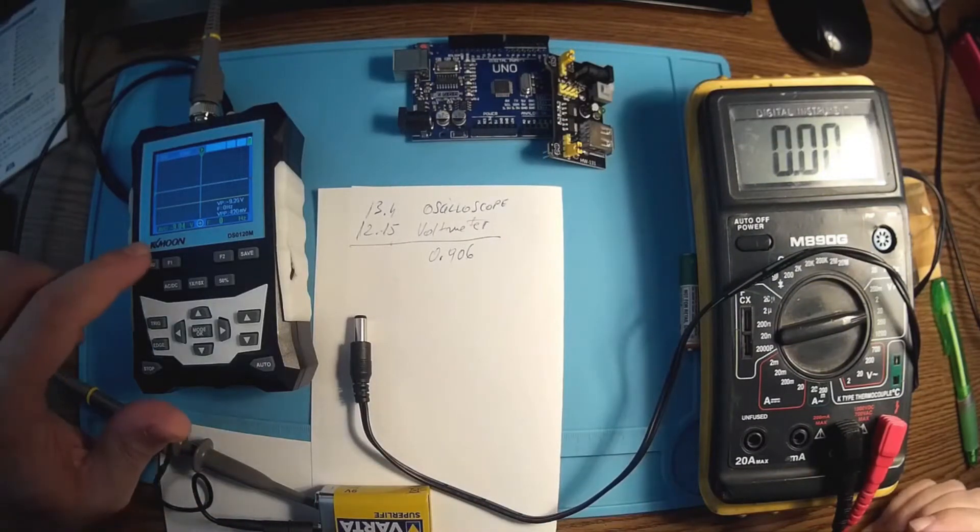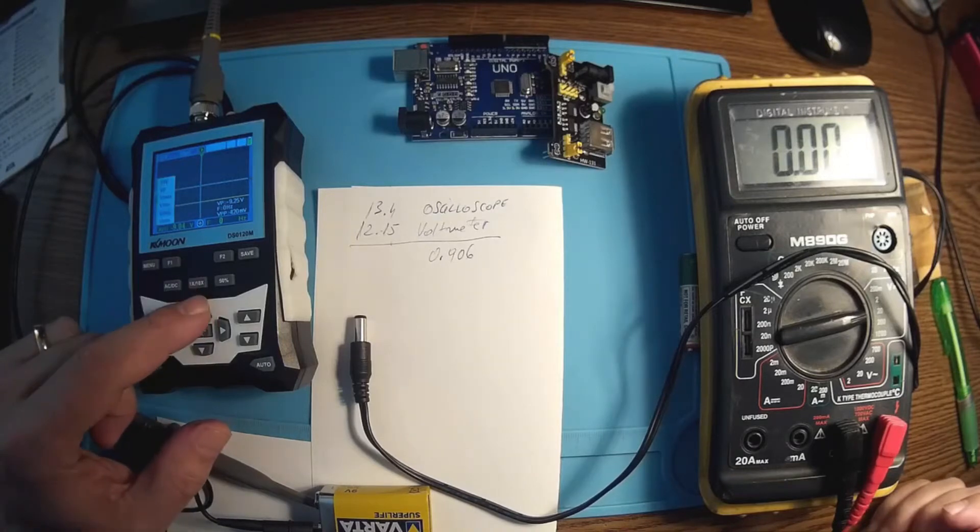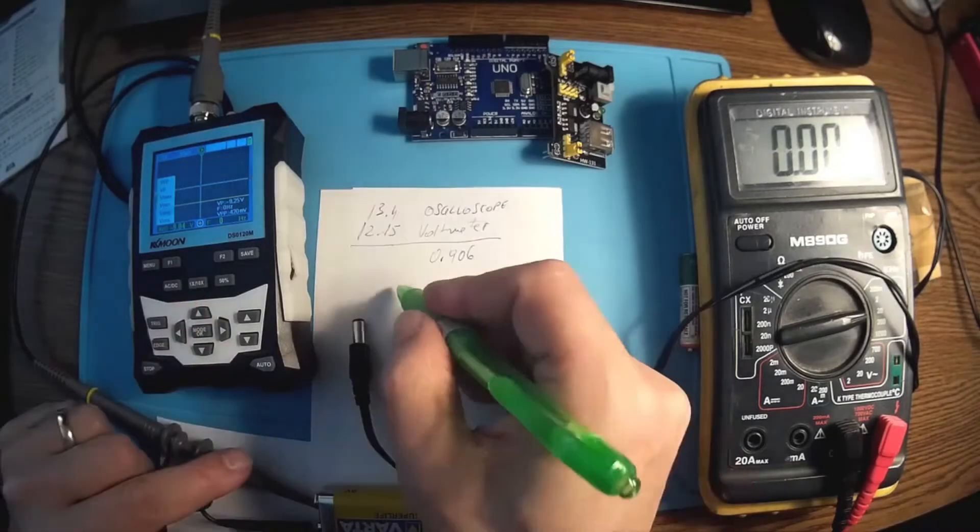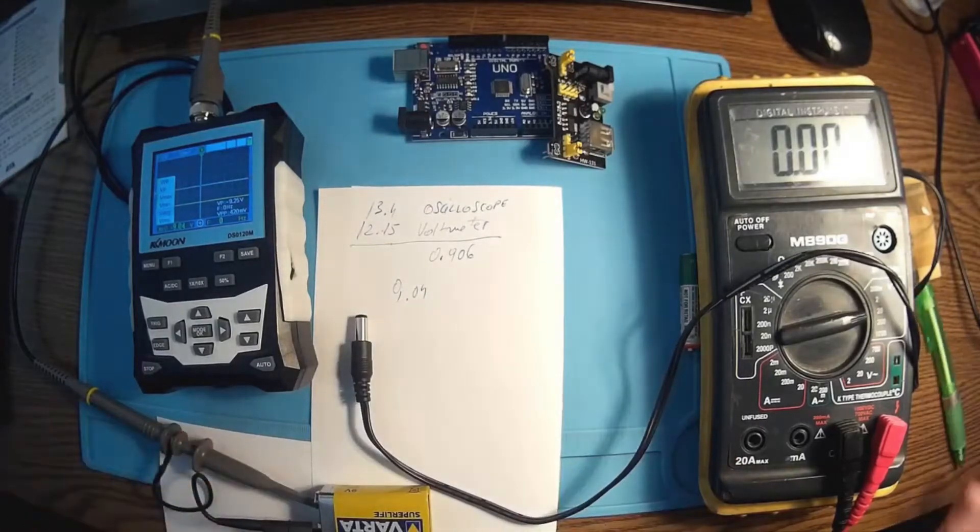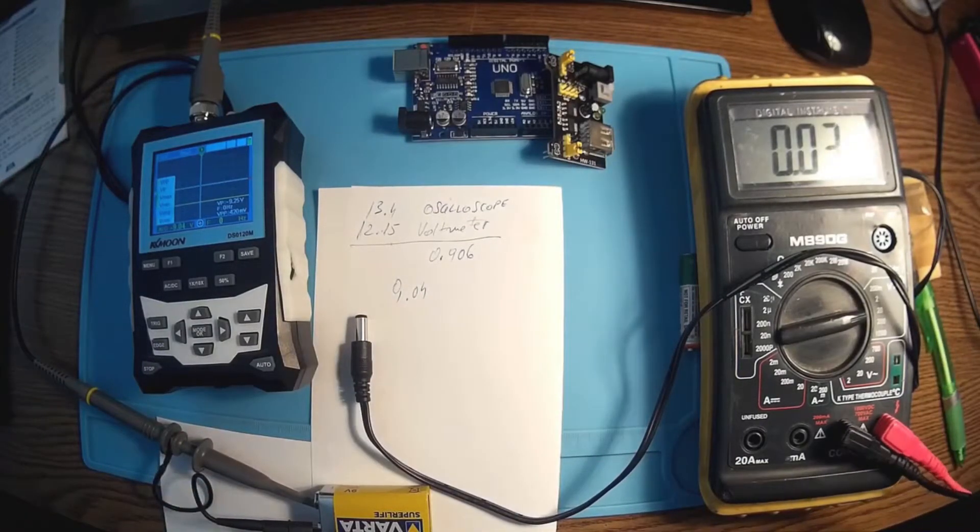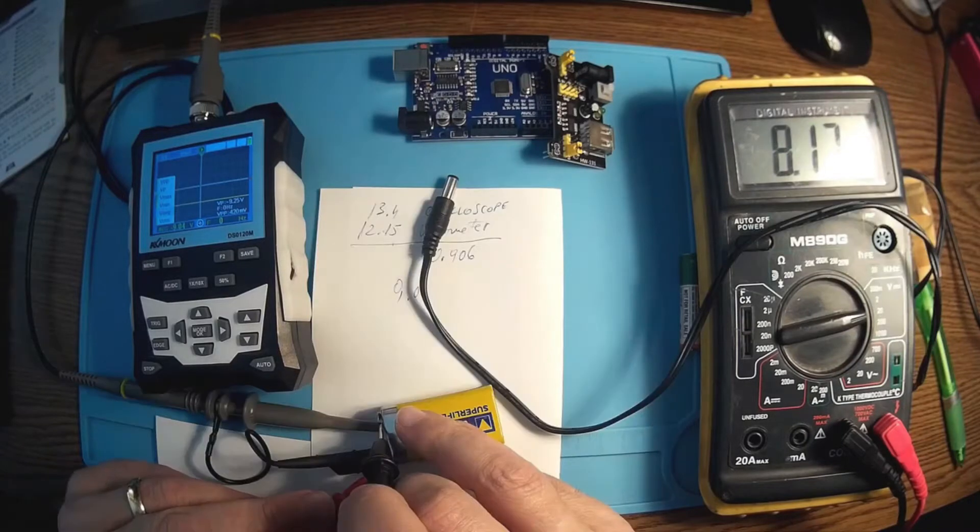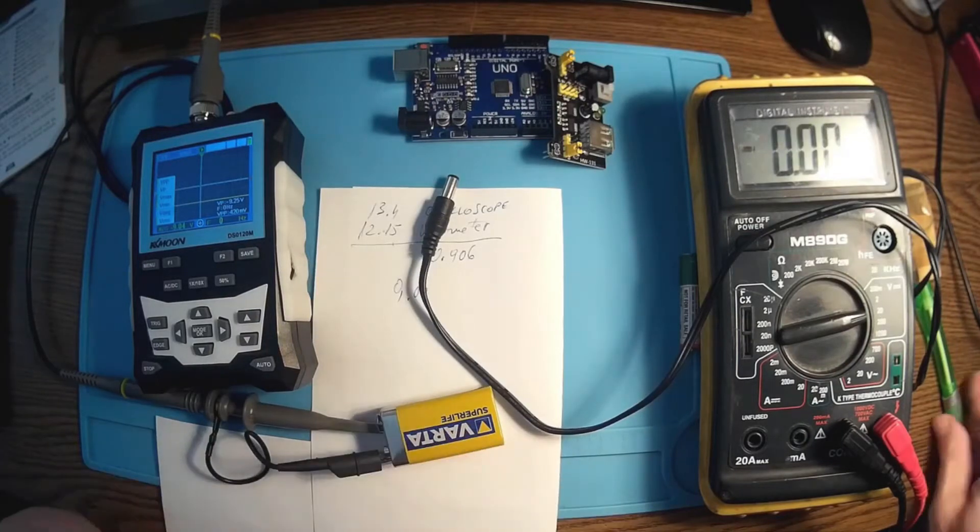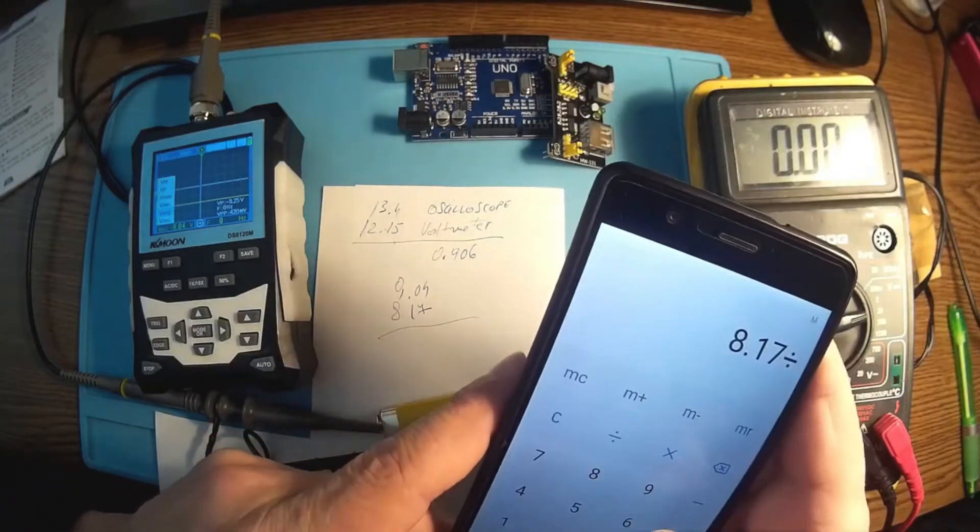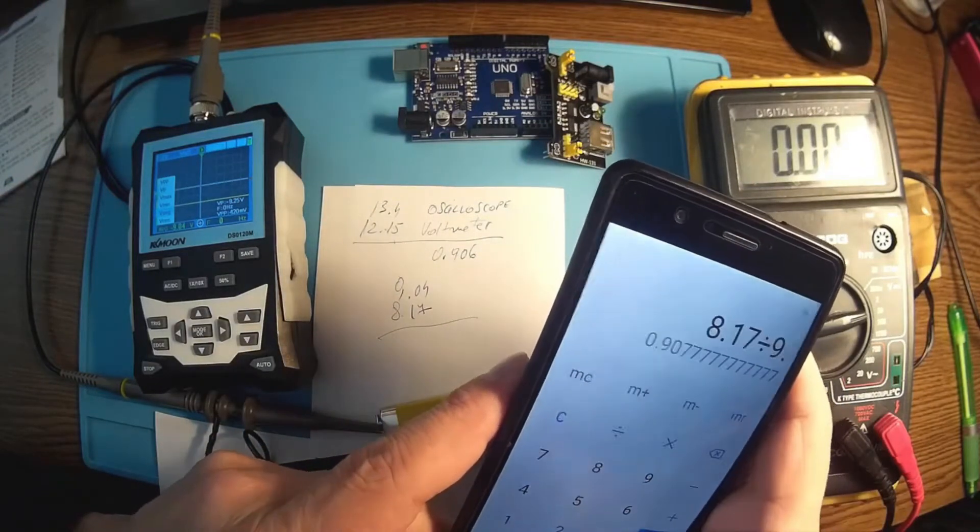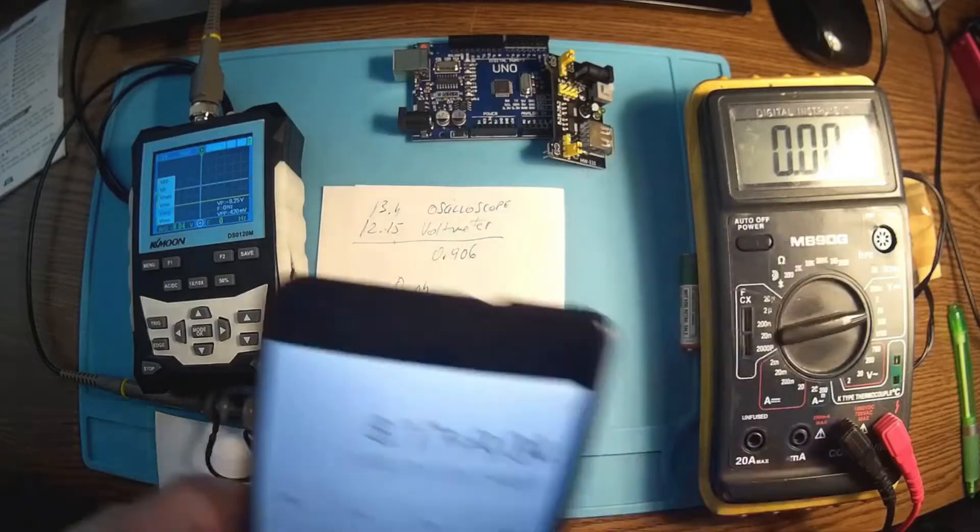OK, let's try a battery now. It's the same story. We have the average voltage on the oscilloscope and it was 9.04. Now on the voltmeter we have 8.17. And as you can see, we almost have the same ratio, around 9%.